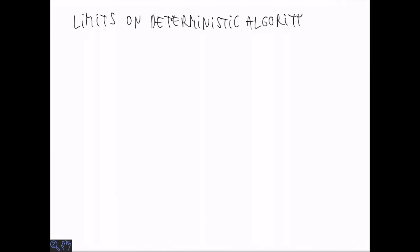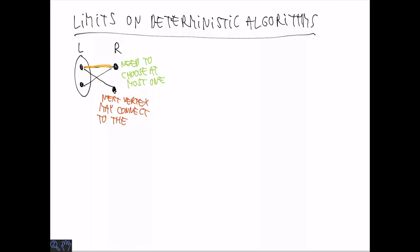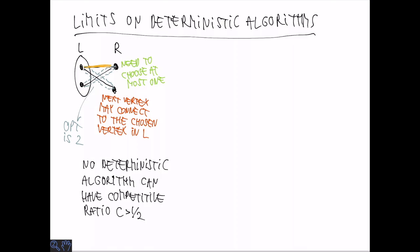Now, there are limits, as you can imagine, about how well you can do, and in particular for deterministic algorithms, it's easy to see that they cannot do too well. So consider the setting where the first vertex in R is matched to two vertices, and we choose one of them. Then it can very well be that the next vertex may connect to the vertex that you have chosen. And then we have a situation where we find a matching of size one, whereas a matching of size two does exist. So opt is two, we get a matching of size one. Now, in general, this can happen if we use a deterministic algorithm. It's always possible to come up with a sequence of vertices and adjacent edges that achieves this competitive ratio of at least or no better than one half.